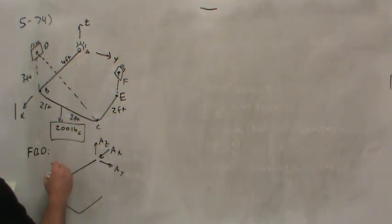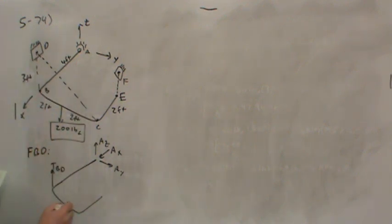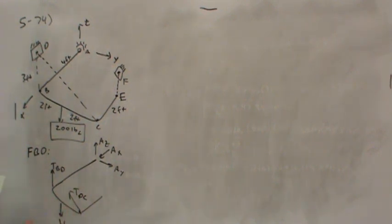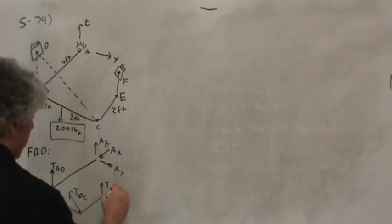A tension in line BD here, a tension in line DC, that's supposed to go down to point C, a weight down here which we know.